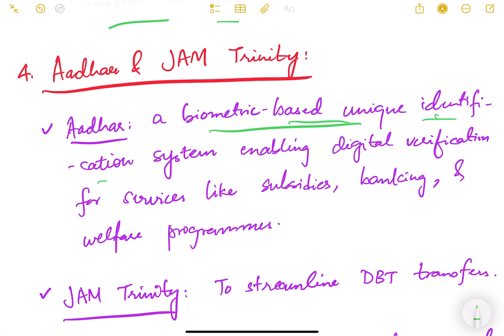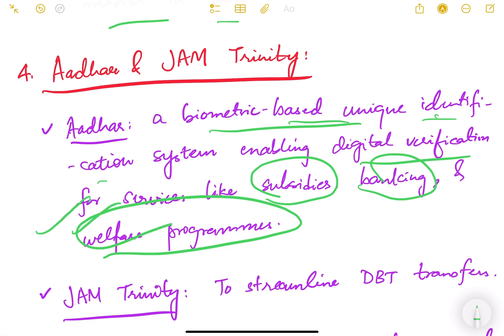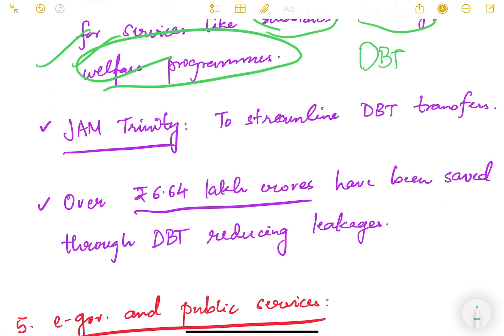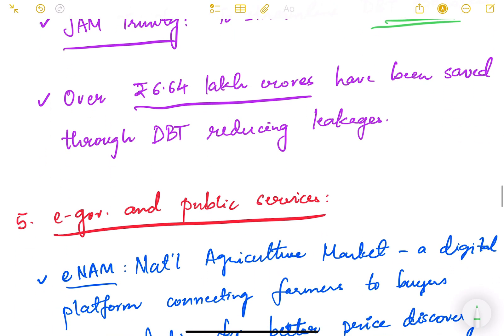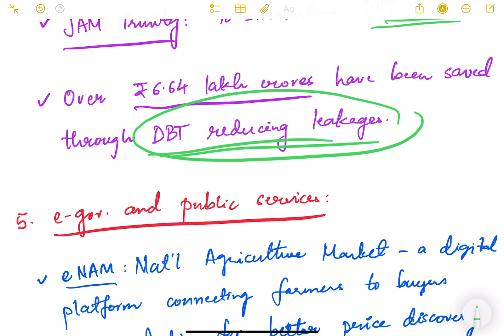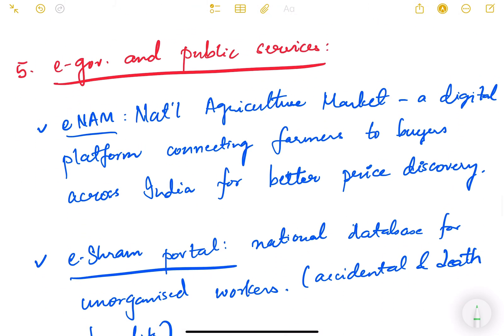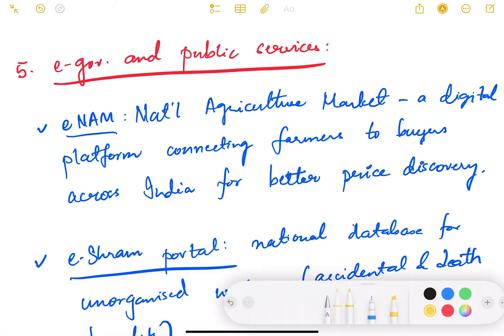Aadhaar is a biometric-based unique identification system that enables digital verification for services like subsidies, banking, and welfare programs. The JAM Trinity — Jan Dhan, Aadhaar, and Mobile number — streamlines Direct Benefit Transfer, allowing government benefits to be transferred directly to beneficiary accounts without any intermediary. Over ₹6.64 lakh crore has been saved through DBT by reducing leakages and eliminating corruption in the system.